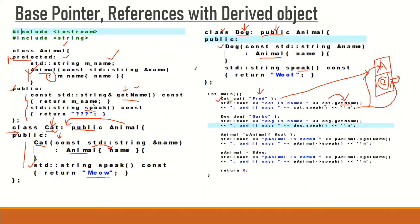So using a derived class object, we can call a base class member function from the base part of the derived class. Similarly, a Dog class object also has two parts: the Animal part and its own Dog part. When we call get_name using the Dog class object, it also calls get_name from the Animal part, because the Dog part itself has no definition for the get_name method.